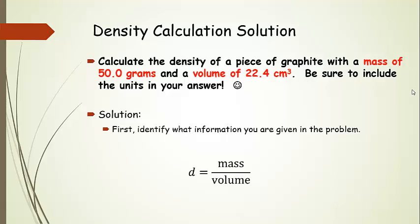The first thing we're going to do is identify what information we are given in the problem. The problem tells us that we have a mass of 50 grams, so we're going to write that down. And a volume of 22.4 centimeters cubed. So we have identified the mass and the volume.